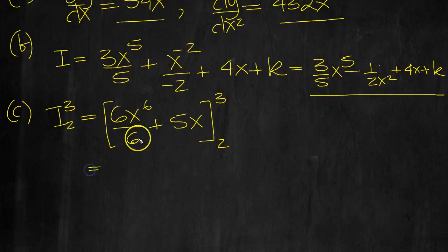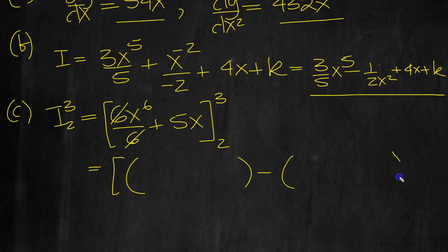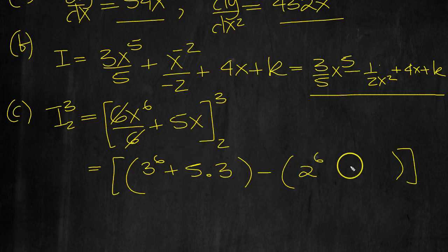So let's have a look at it then. The 6s will cancel, so it's just simply, here's the template: top value take bottom value. Put the 3 in, 3 to the 6 plus 5 times 3, and then put the 2 in, 2 to the 6 plus 5 times 2.